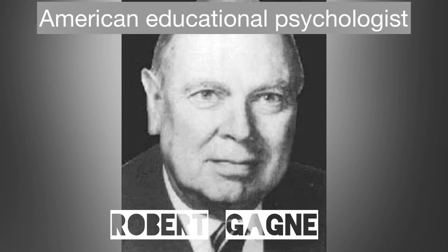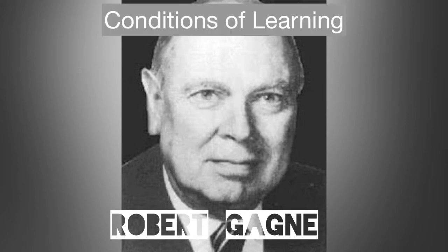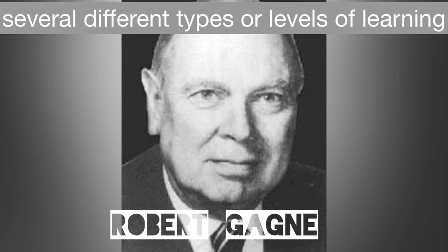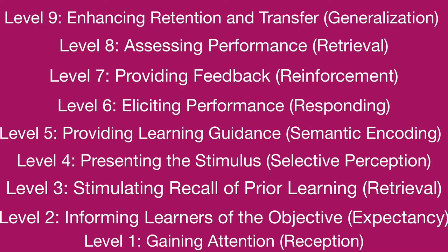First is Robert Gagne. He is an American educational psychologist, best known for his concept Conditions of Learning. This theory stipulates that there are several different types or levels of learning. These events should satisfy or provide the necessary conditions for learning, and serve as the basis for designing instruction and selecting appropriate media.